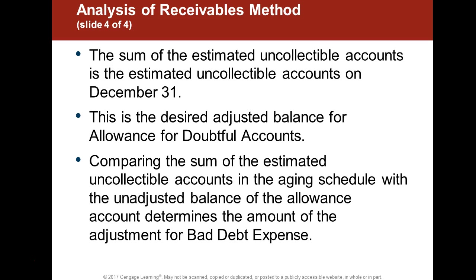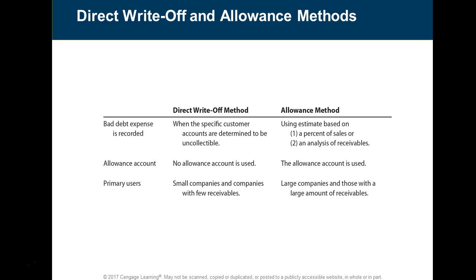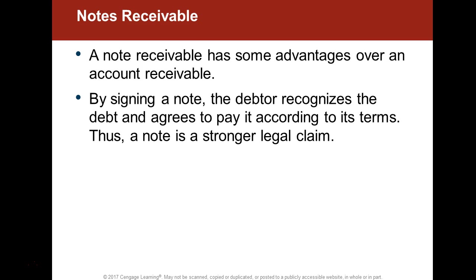With the balance sheet receivables method, you are calculating your ending balance — balancing your allowance account, not your expense. You determine what your allowance balance should be, then compare it to what you have already recorded, and the difference is your adjustment. This is a very important distinction. A summary sheet illustrates how the two methods differ, what information you need to collect, and the journal entries required.